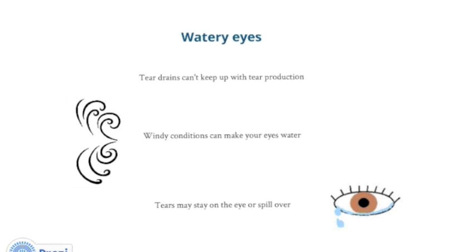So why do people get watery eyes? Eye watering may be due to extra tear production, which is normal when we cry. Watering also happens when the tear drains can't keep up with tear production — this is why our eyes water in cold, windy conditions. The tears may stay on the eye causing watery vision, or they may spill over the lids.